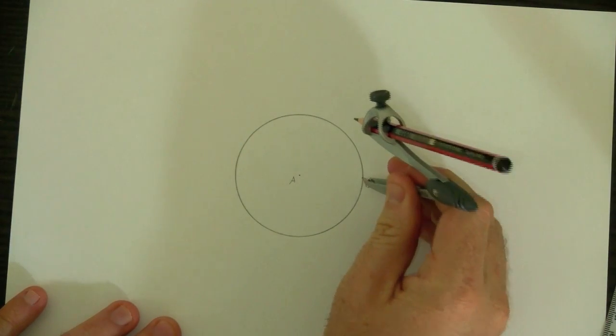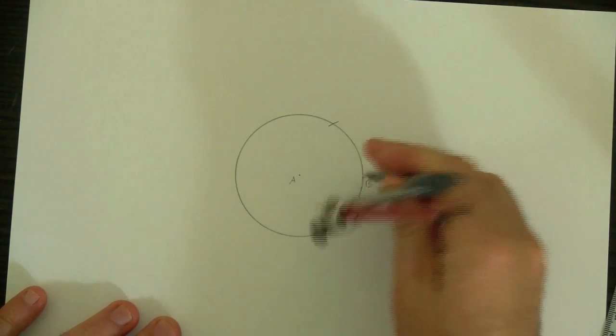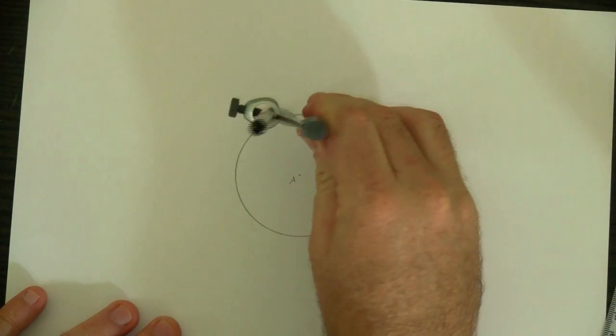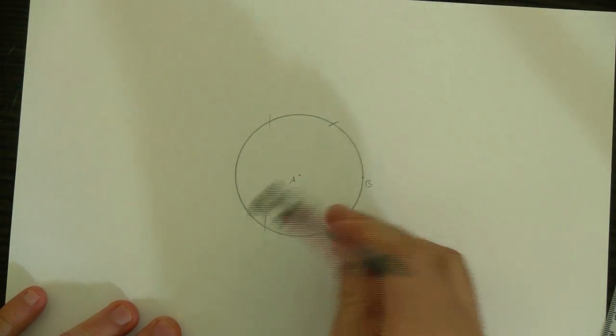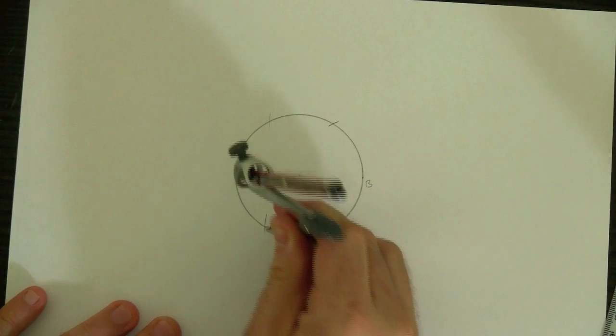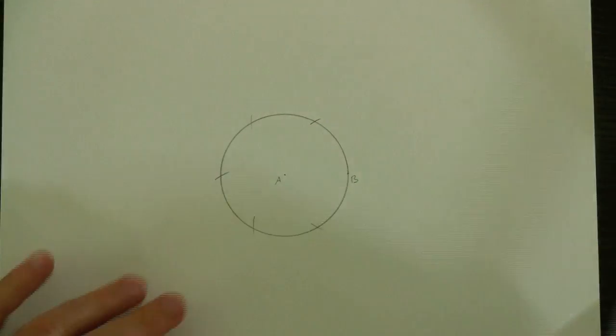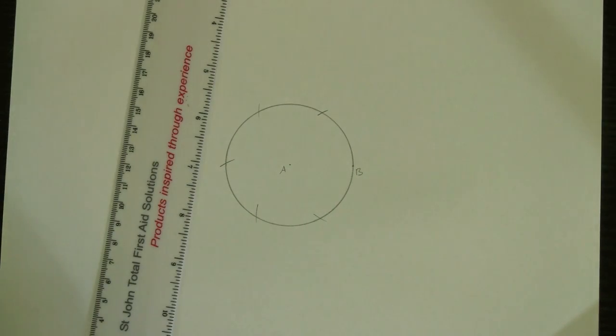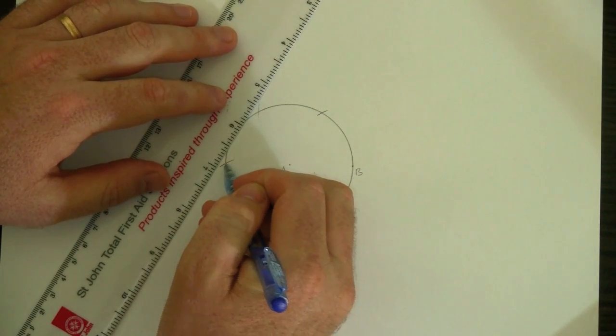And then, from B, I'll draw two short arcs like that and like that. Then from each of these, another one, another short arc. And finally, from either of those, one more little arc there. Now we've got six points around the circle. And these six points are the corners of the regular hexagon.